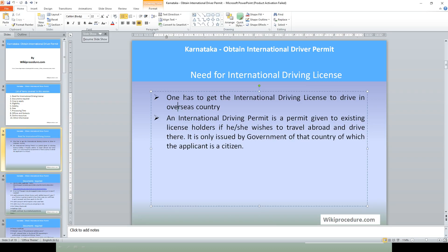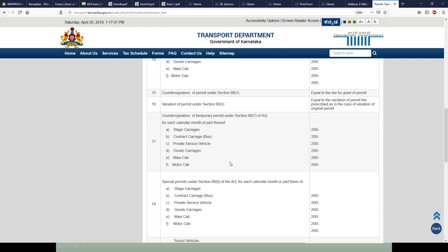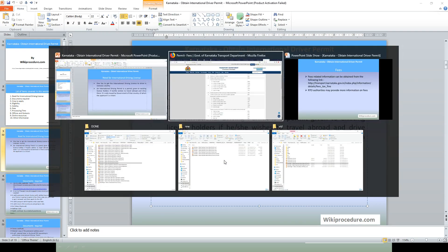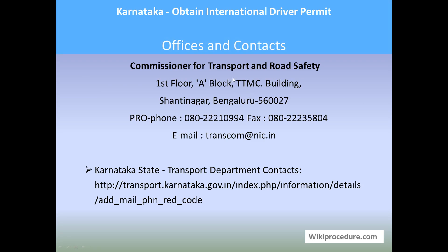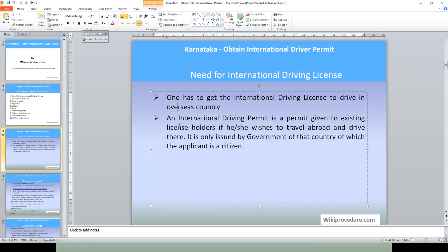Regarding fees, authorities will advise the fee structure. A link is provided to reach the Karnataka fee-related page, which guides you about the different services and the amounts collected for each. This will inform you of the money you need to carry. Processing time: you will get the license on the same day evening or at most the next morning. For offices and contacts, the Commissioner for Transport and Road Safety, TTMC Building, Shantinagar, Bangalore-27 — phone number and email are provided to clarify doubts and complaints.